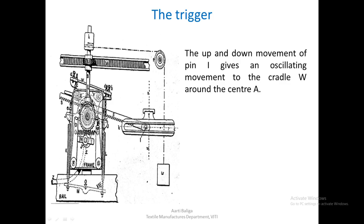Pin I gives an oscillating movement to cradle W, because pin I on one side and on the other side is the rack which is a part of upper cradle W. Because of this movement it will actually try to oscillate cradle W around center A. Cradle W is independent and can oscillate both anti-clockwise and clockwise as the bobbin rail moves up and down.